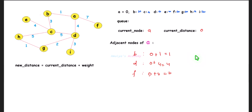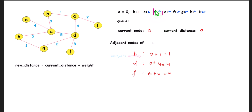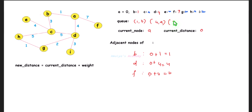Compare each new distance with the recorded smallest distance. Since 1 is less than infinity, update the distance of B to 1; 4 is less than infinity, update D to 4; 7 is less than infinity, update F to 7. Add these to the priority queue: (1, B), (4, D), and (7, F).